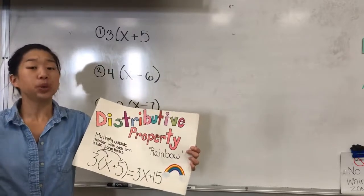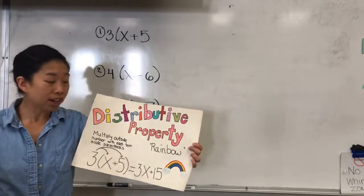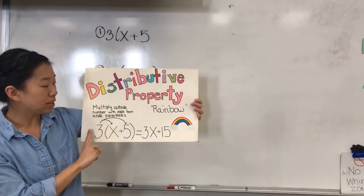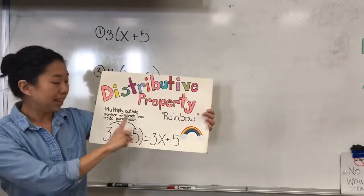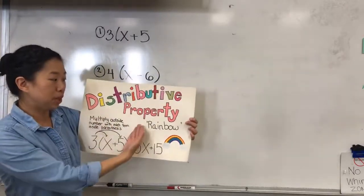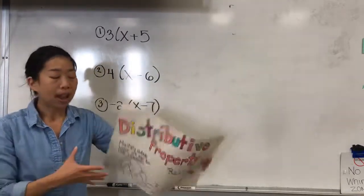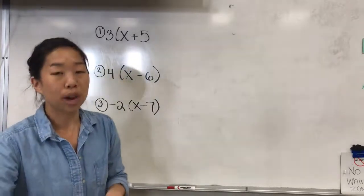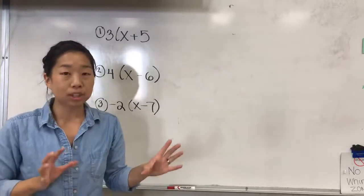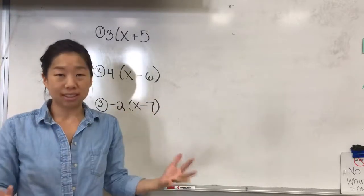Of course when you teach this you want to teach your students the correct terminology, so you have to remember to teach your students that we multiply the outside number with each term inside the parentheses. However, an easy way to remember distributive property is rainbow, and I use it interchangeably. I use the term rainbow and distribute and multiply interchangeably so that my students remember they all mean the same thing.